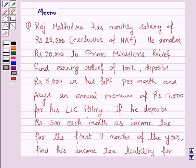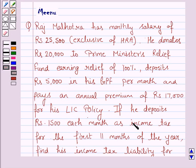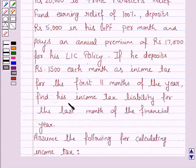Hello and welcome to the session. Let us discuss the following question. Raj Malhotra has a monthly salary of Rs 25,500, exclusive of HRA. He donates Rs 20,000 to the Prime Minister's Relief Fund, earning a relief of 100%, deposits Rs 5,000 in his GPF per month, and pays an annual premium of Rs 17,000 for his LIC policy. If he deposits Rs 1,500 each month as income tax for the first 11 months of the year, find his income tax liability for the last month of the financial year.